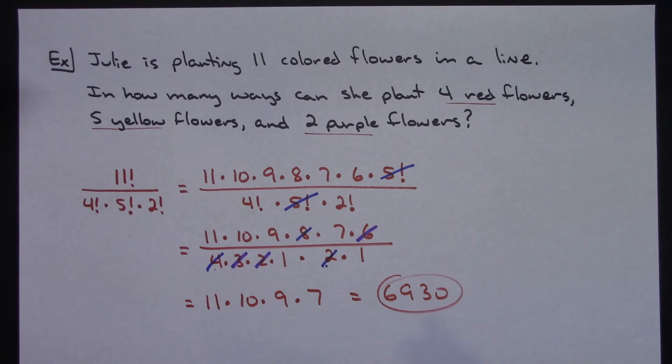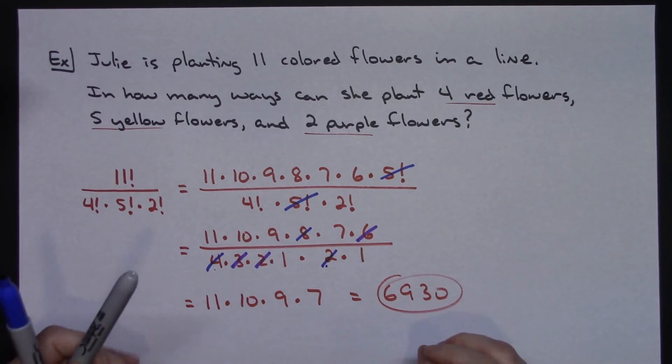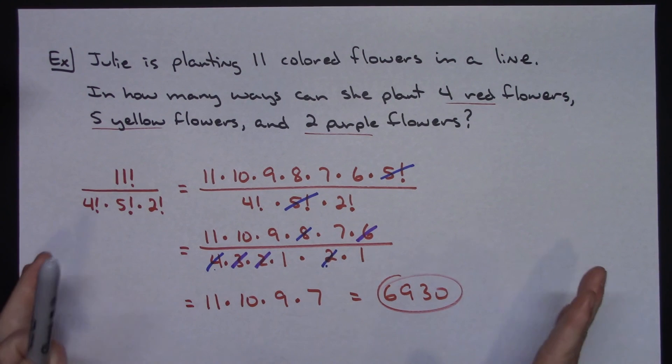So just one quick example there with a couple formulas on how you work out permutations with identical objects. Thanks for watching. I really appreciate it. Give me a thumbs up and be sure and share with your friends. Thanks!